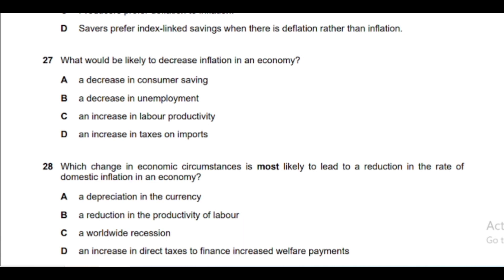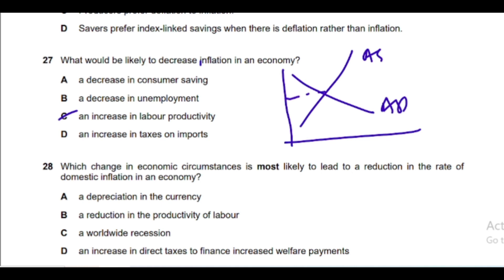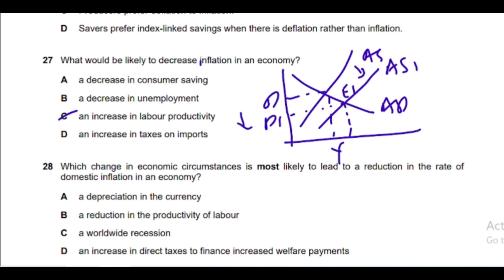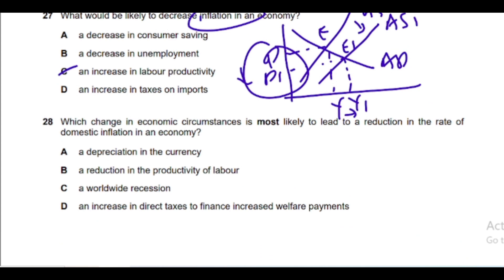Question 27: What would likely decrease inflation in an economy? Inflation is when the general price level increases, so we want to decrease the general price level. Option C is correct — an increase in labor productivity increases aggregate supply and reduces the price level. On the AD/AS diagram, if labor productivity increases, AS shifts right; new equilibrium E1 shows real GDP rising from Y to Y1 and price level falling from P to P1, reducing inflation.